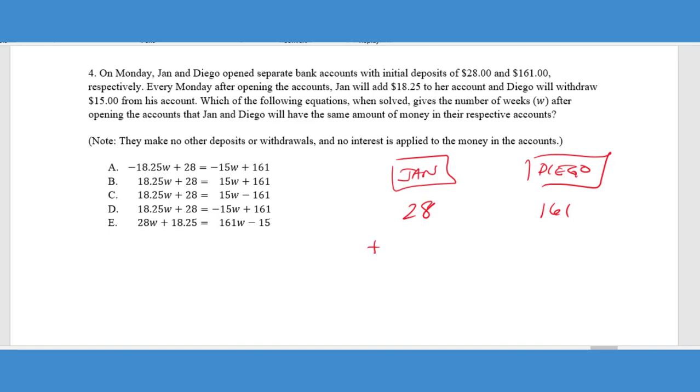So I know that Jan opened up a bank account and she had $28 and Diego opened up a bank account and he had $161. It says every Monday after opening the accounts, Jan will add $18.25. So she's going to add, excuse me, $18 and 25 cents and Diego will withdraw $15. So he's actually going to take out $15. It says, which of the following equations when solved gives the number of weeks after opening the accounts that they will have the same amount of money. So we basically want to know when these two accounts are going to equal.